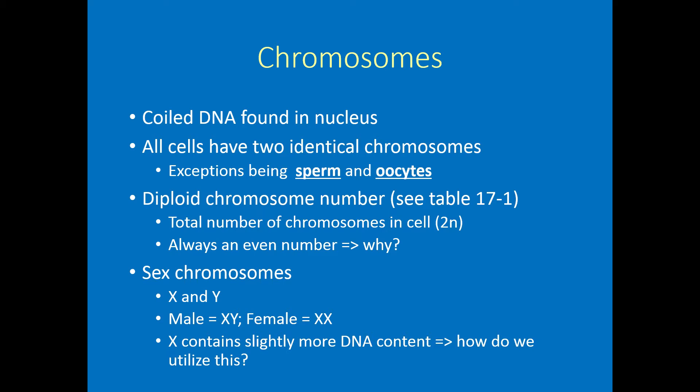Take a look at Table 17-1 in your book — it gives diploid chromosome numbers for various species, something you may want to be familiar with for the final exam. There's always an even number in this table because if anything is in paired form, multiplying by two always gives an even number. The only chromosomes that are special are our sex chromosomes; all others are called autosomes. Sex chromosomes are your X and Y — all males are genetically XY and all females are genetically XX.